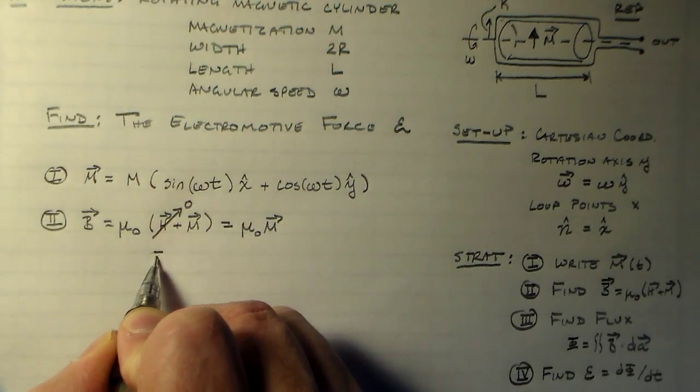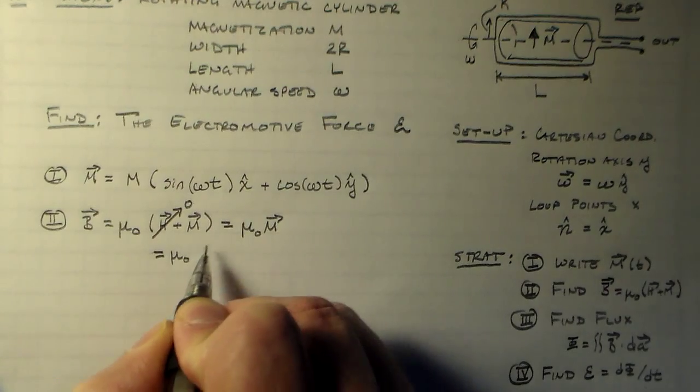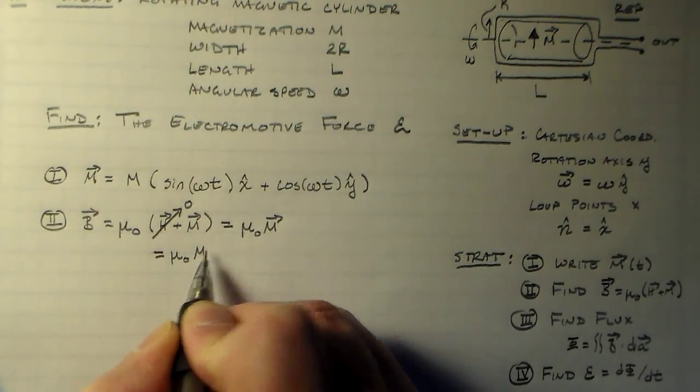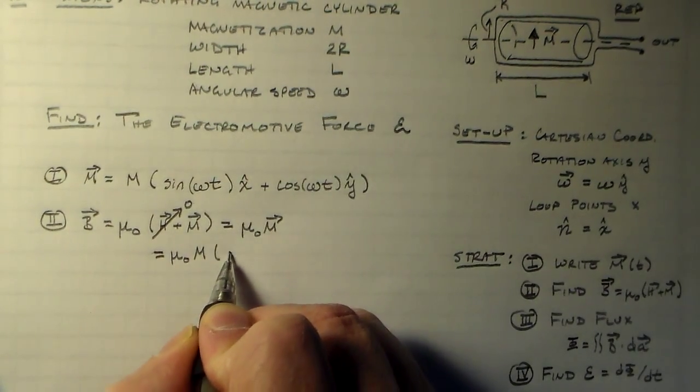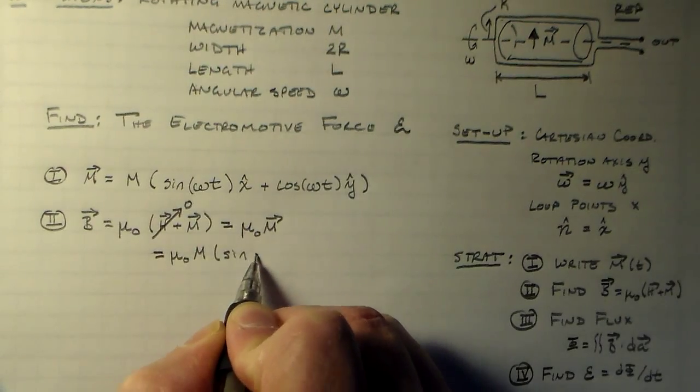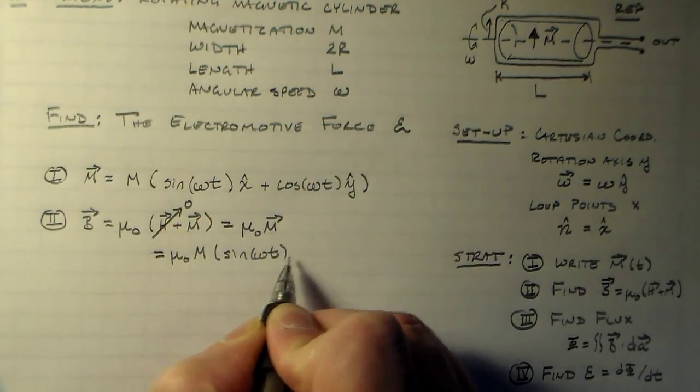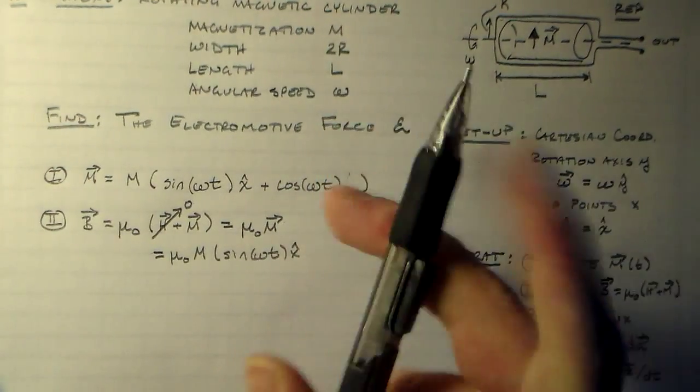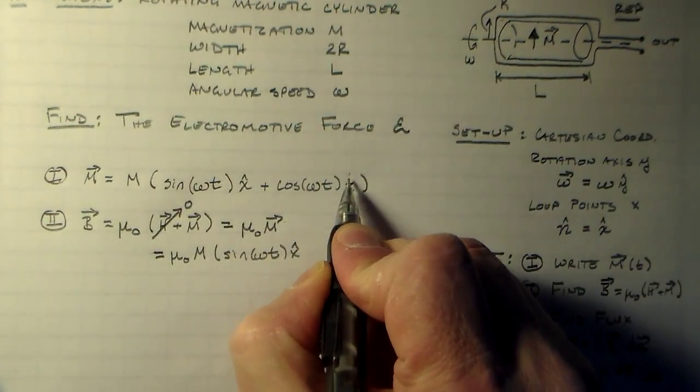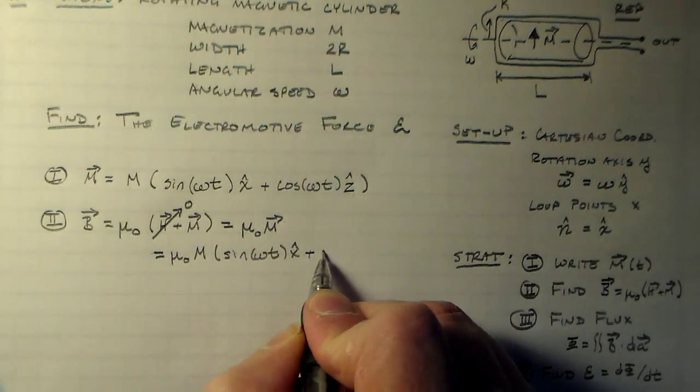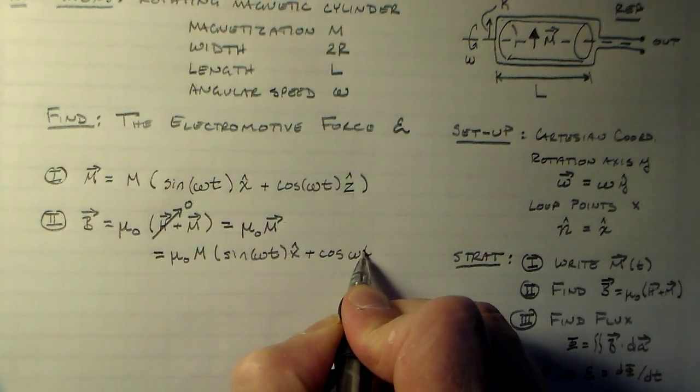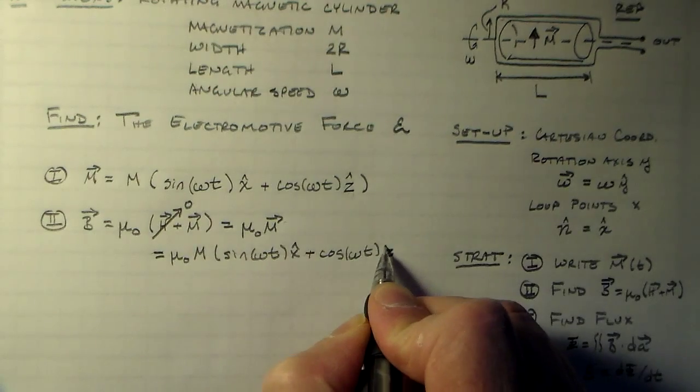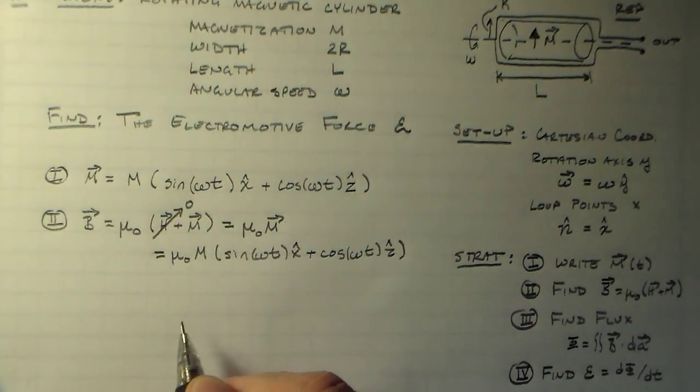And we've already got a nice expression for that right there. So let's go ahead and just say that b is equal to mu-naught m times sine omega t in the x-hat direction. Excuse me, this was supposed to be in the z-hat direction. Plus cosine omega t in the z-hat direction.